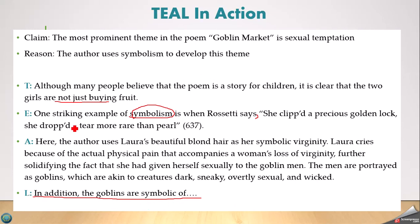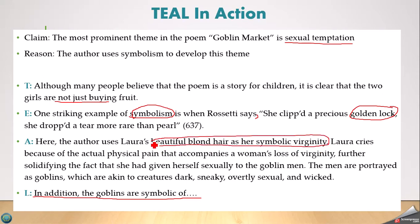This is a really clear paragraph. We know right away that the idea — 'not just a story for children' — connects to the claim. The writer gives a specific example with the golden lock, explains what that symbol is rather than just pointing it out, goes into more detail, and then connects to the next point. Laura is losing her virginity, being assaulted by these dark and overtly sexual goblins. It's a really well-structured paragraph.